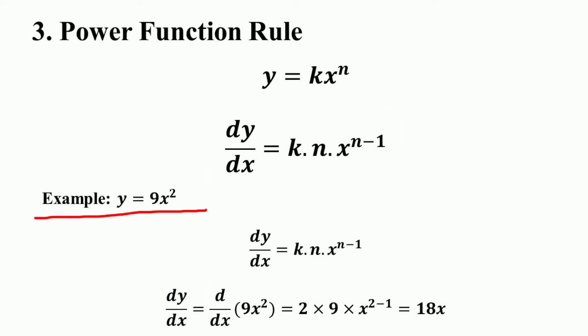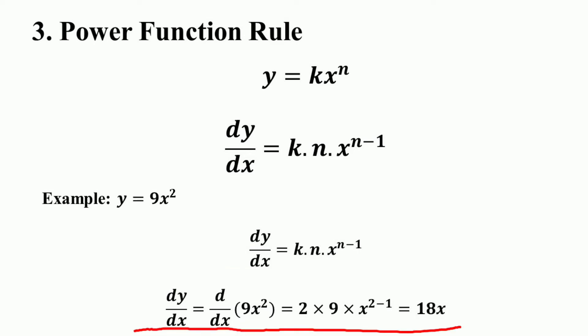For example, if y = 9x², then the derivative dy/dx = k · n · x^(n-1). So dy/dx of 9x² = 9 · 2 · x^(2-1), which equals 18x^1, which is equal to 18x.